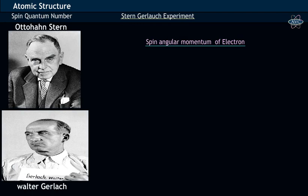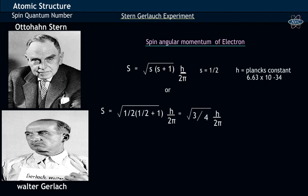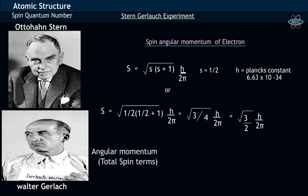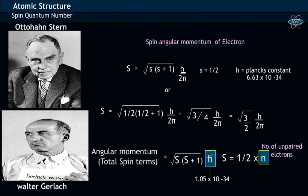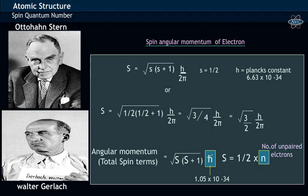The spin angular momentum of an electron is given by the formula: square root of S times (S plus 1) times h by 2π. Here S has value of half, while h is Planck's constant. In terms of total spin, the angular momentum is represented as square root of S times (S plus 1) times h-bar. Here S equals half times two times number of unpaired electrons, while h-bar is a constant with value 1.05 times 10 to the power minus 34.